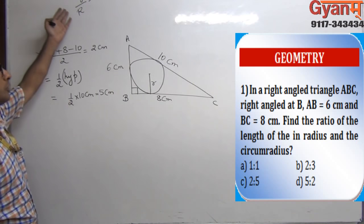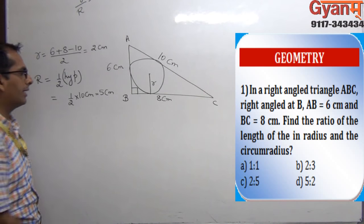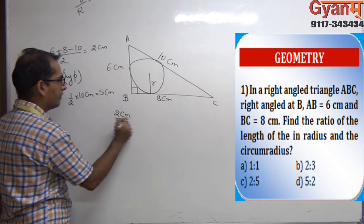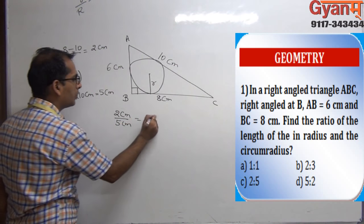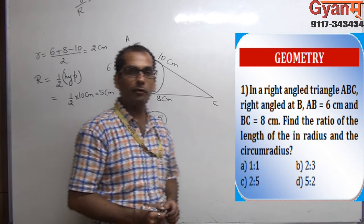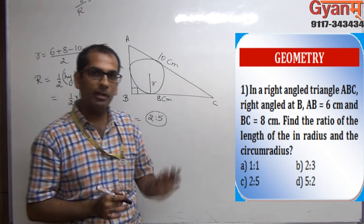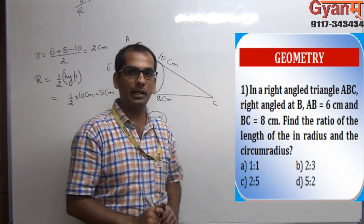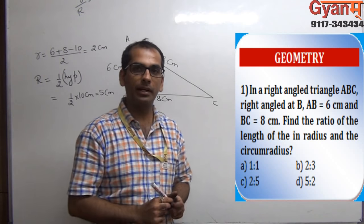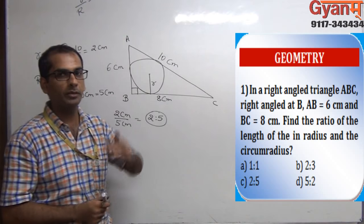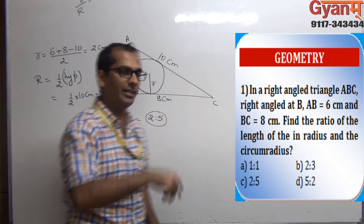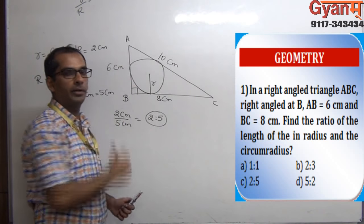So we can say that the ratio of small r to capital R is equal to 2 centimeters upon 5 centimeters, that is 2 ratio 5. To summarize: whenever the triangle is a right angle triangle, small r equals perpendicular plus base minus hypotenuse divided by 2, and capital R is always equal to half of the hypotenuse.